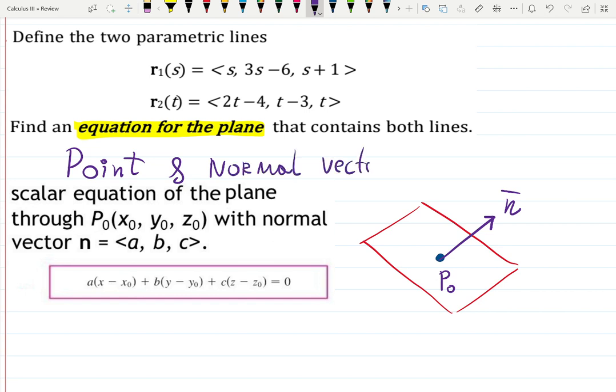Normal vector. Nice. So it is a scalar equation of the plane through the point (x₀, y₀, z₀) with normal vector ⟨a, b, c⟩.